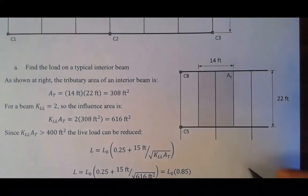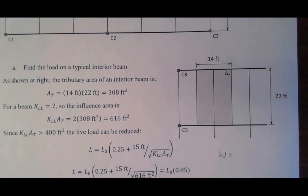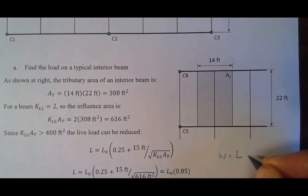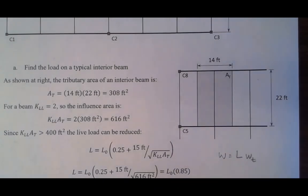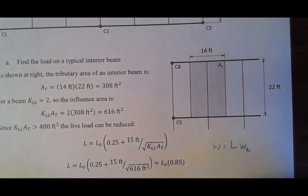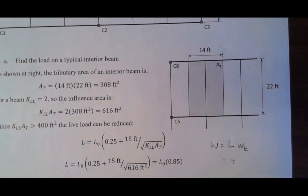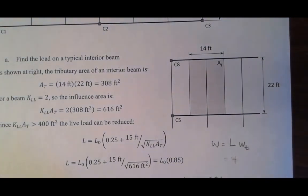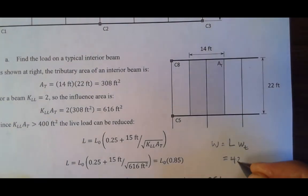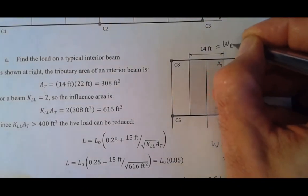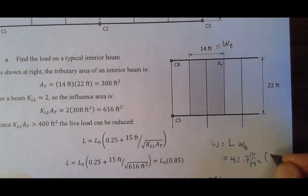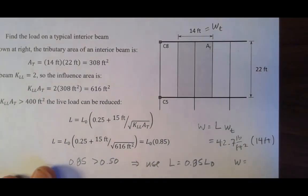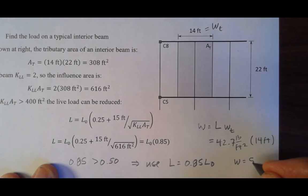So W is equal to L times the tributary width, W_T. So that's 42.7 pounds per foot squared, what I'm calling W_T up here, times the 14 feet. So the distributed load acting on that beam, if you do that calculation, it's 598 pounds per foot.